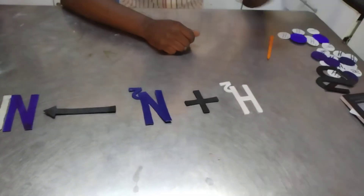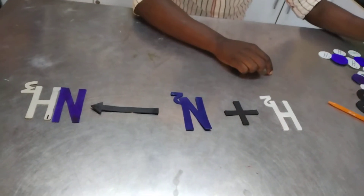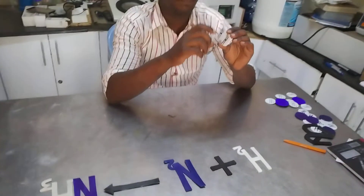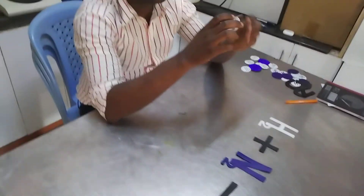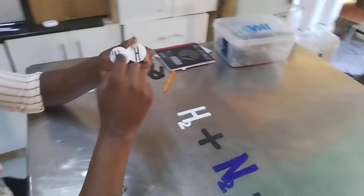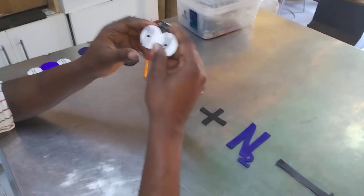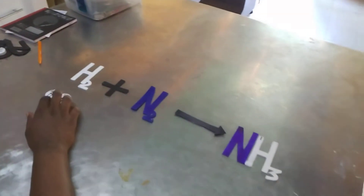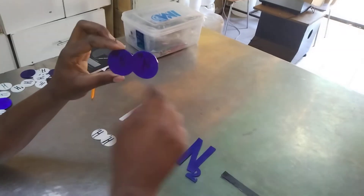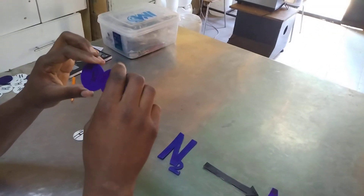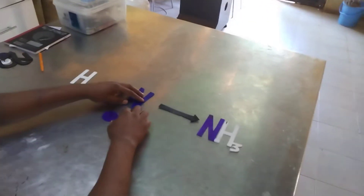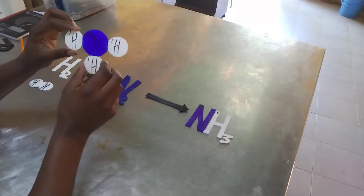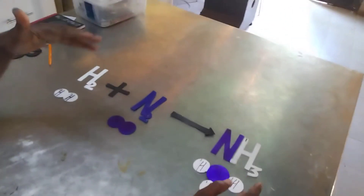For example, this model here represents nitrogen gas — you can see we have two nitrogen atoms. This one represents hydrogen gas, we have two hydrogen atoms here. We also have another model here that represents nitrogen gas, with two nitrogen atoms combined together by covalent bonds. We also have this molecule which is ammonia.